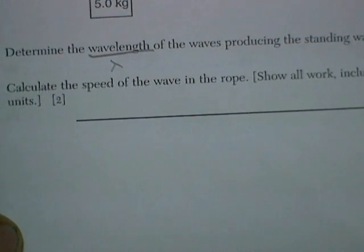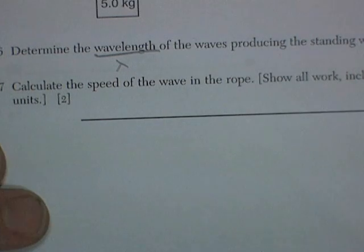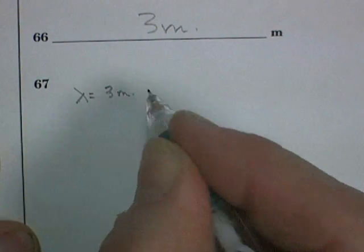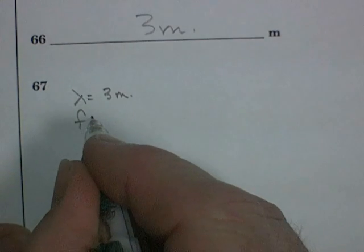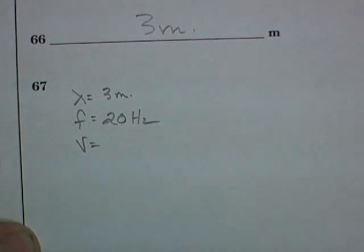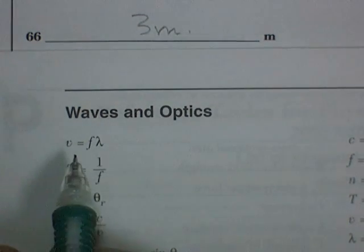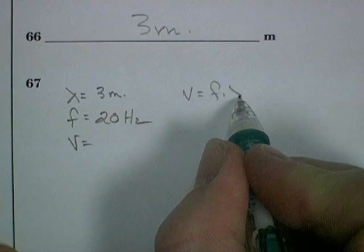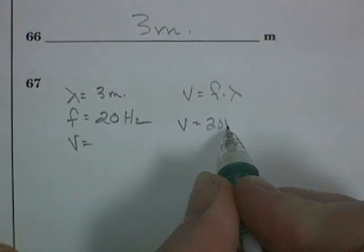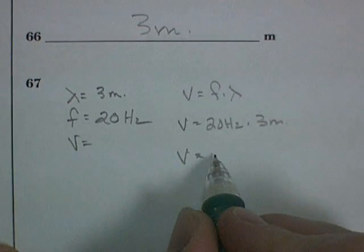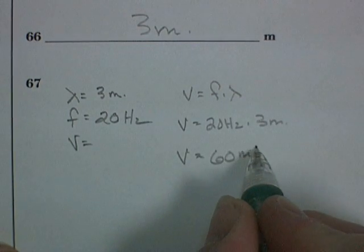And let's see the last. Calculate the speed of the wave in the rope. Show your work, including equation and substitution. Well, here I know that the wavelength is 3 meters. The frequency was given to me as 20 hertz. And I'm looking for velocity. Formula for velocity. Frequency times wavelength. Velocity equals frequency times wavelength. Velocity equals 20 hertz times 3 meters. Velocity is equal to 60 meters per second.